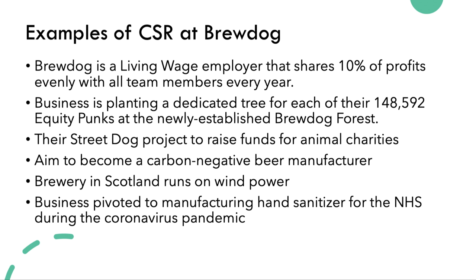Recently, BrewDog bought around 200,000 acres in the heart of the Scottish Highlands and created the BrewDog forest, planting a biodiverse native broadleaf forest designed to take carbon out of the air. Their aim is to have planted one million trees by 2022, with up to 150,000 planted so far.